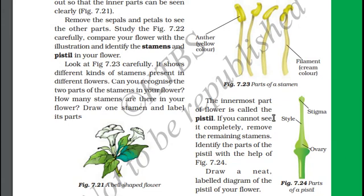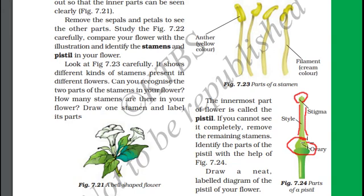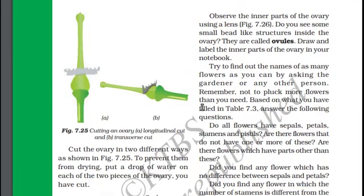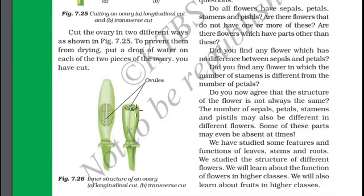The innermost part of a flower is called pistil. In the pistil you can see the stigma, which is at the top. This part is called the style, and here we can find the ovary. Carefully cut the pistil and you can see ovules inside the ovary.